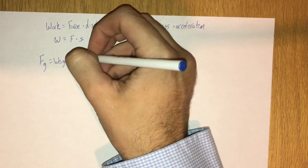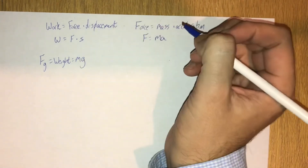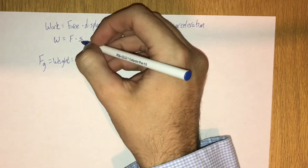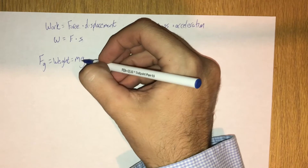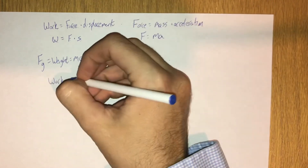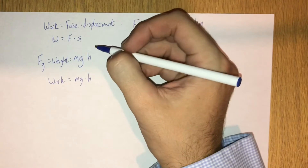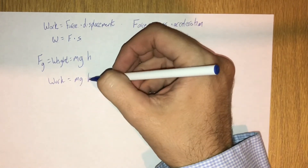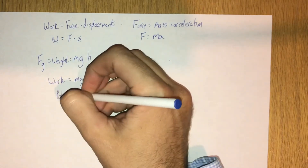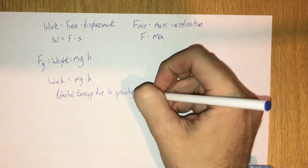Weight is equal to mass times the acceleration due to gravity, which we'll use lowercase g as the convention — local g, 9.81 meters per second squared here on Earth. Because the displacement is vertical, we can call it h for height. So the force needed to lift an object is the weight mg, and the displacement is a height h. Here we have an equation for work equal to the weight mg times the displacement h. The work that we do lifting an object with weight mg in a gravity field through vertical displacement h, we call that the potential energy due to gravity, and it's equal to mgh.